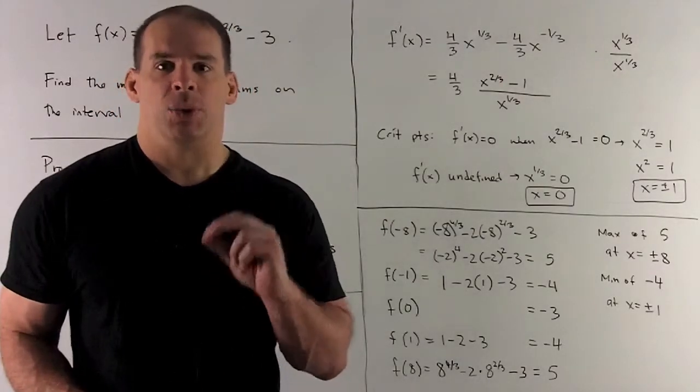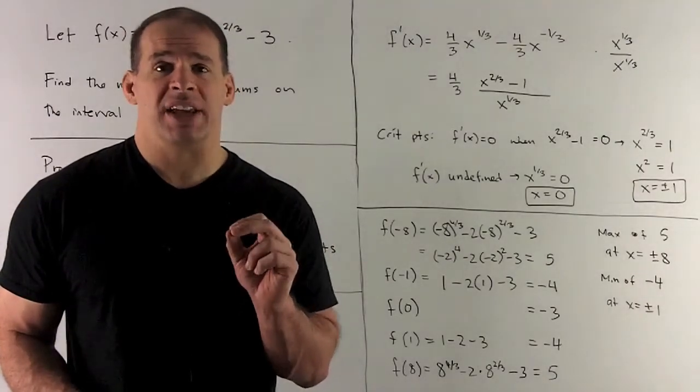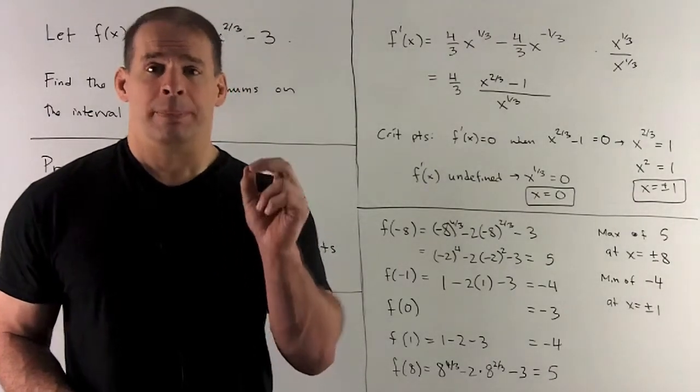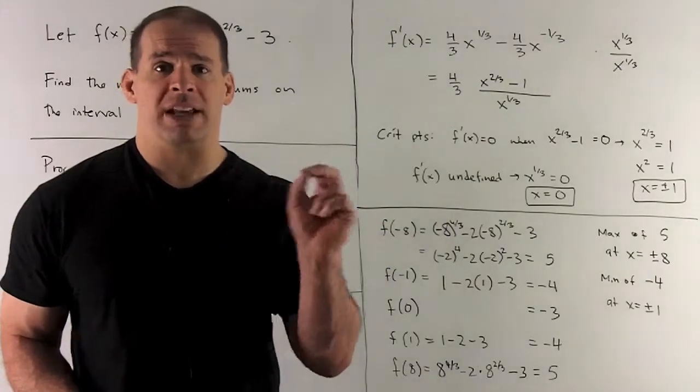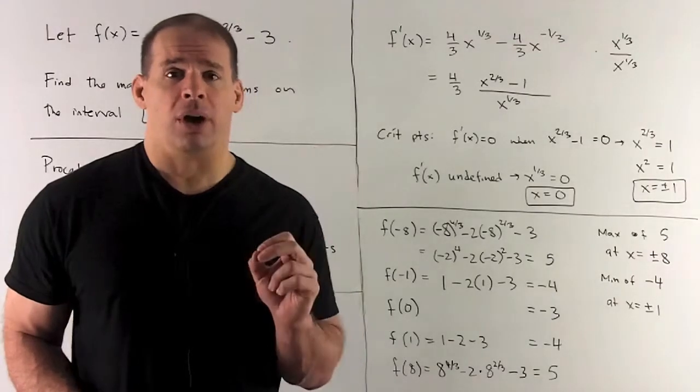We need to take -8 to an exponent. So let's just recall how we do that correctly. If I have (-8)^(4/3), we do the cube root first and then raise what comes out to the 4th power.